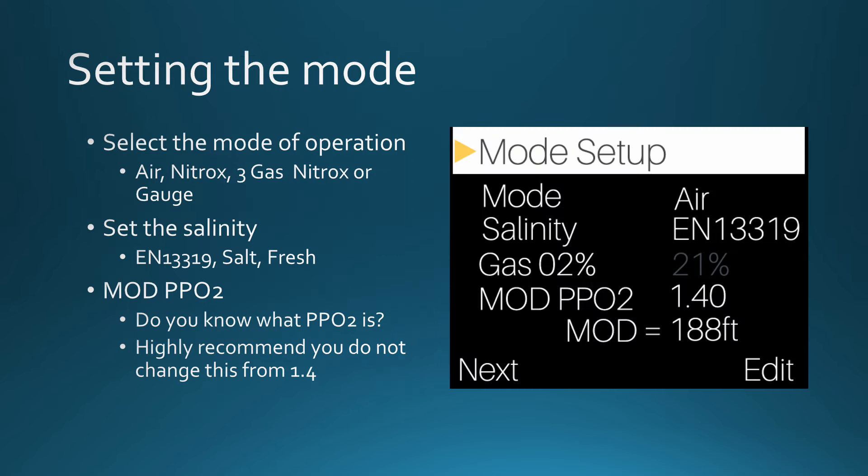Let's start by talking about setting the mode for your computer. This is how the Peregrine looks when you navigate to the mode setup screen — this is where you set the mode of operation. For most recreational divers, the selection will be either air or nitrox. Many computers have a gauge mode that turns the computer into a bottom timer. The Peregrine also gives you a three-gas nitrox setting for more advanced diving. You can also set up for the salt versus fresh water environment. Let's skip over gas O2 percentage for now.